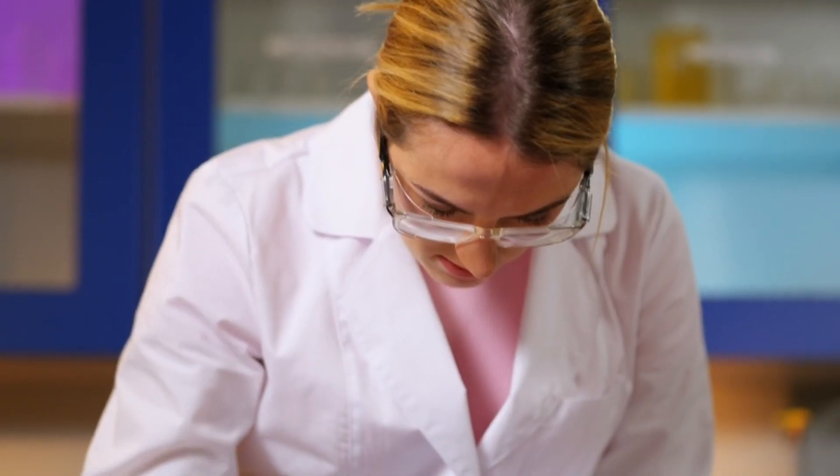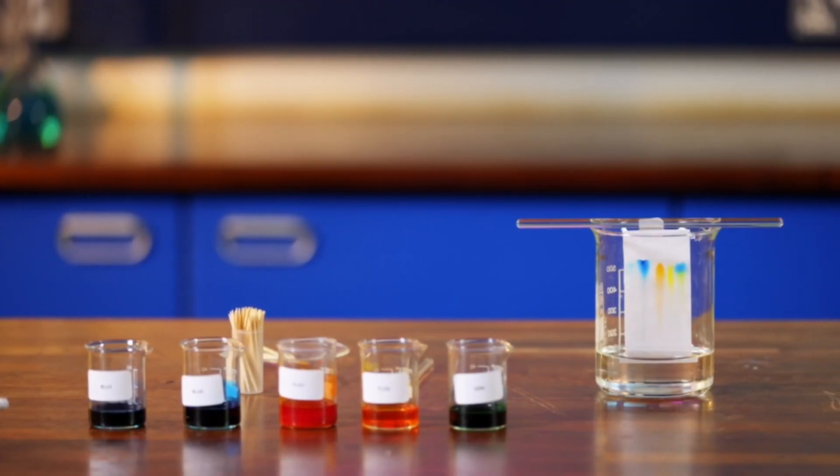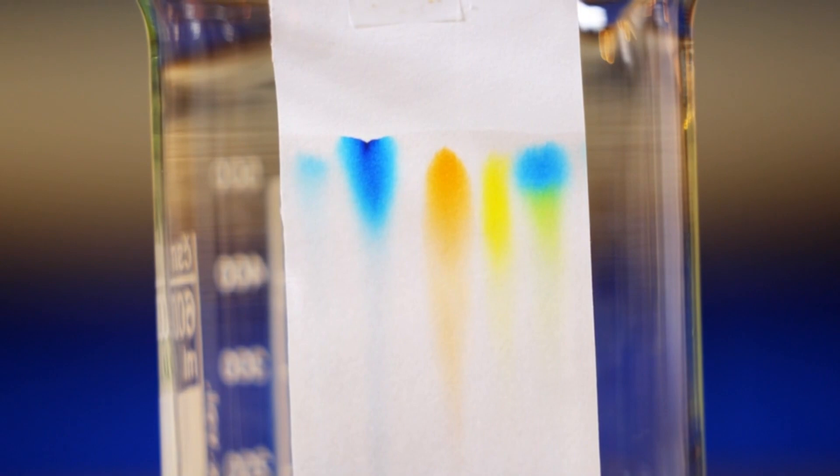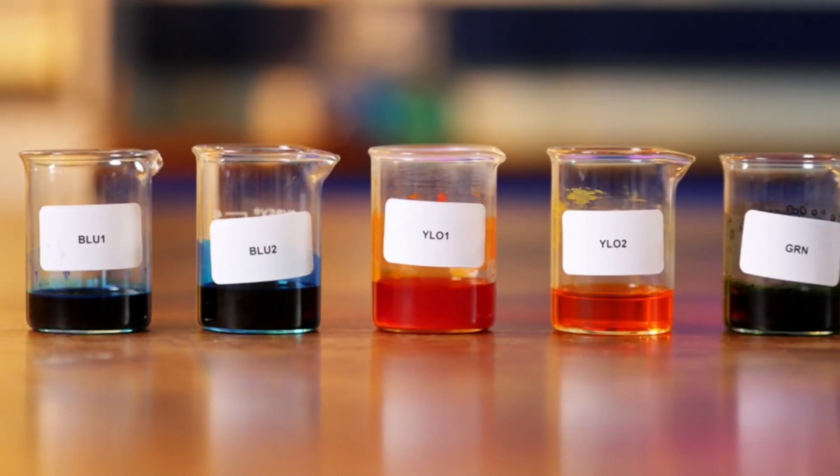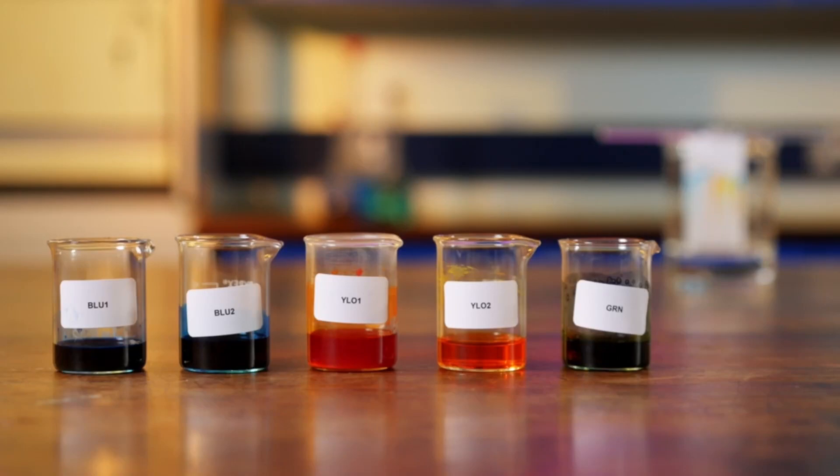Chromatography is a technique used to separate soluble substances that have been mixed together. It's normally used to separate colored mixtures like food colorings. We are going to use chromatography to separate these different food colorings into the colored pigments they are made from.